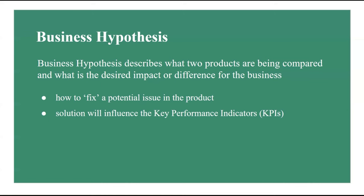In this step we need to perform power analysis and calculate the minimum sample size to design our A/B test. A/B test design includes three steps: first, power analysis — making assumptions about model parameters including the power of the test, the significance level, etc.; second, using those parameters to calculate the minimum sample size for control and experimental groups; and third, deciding on test duration depending on several factors.